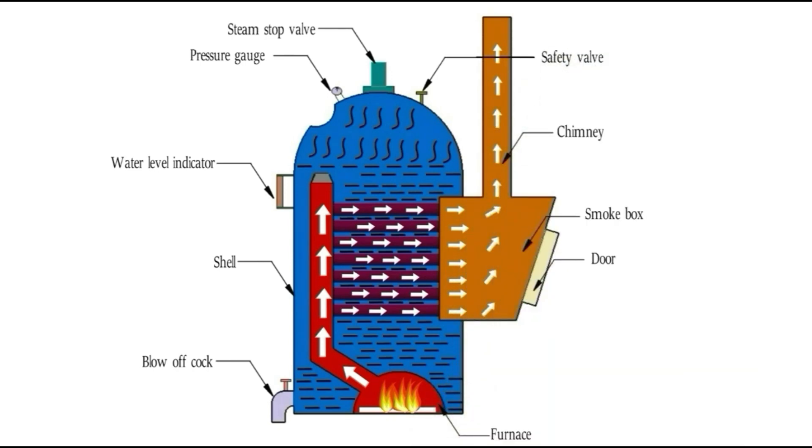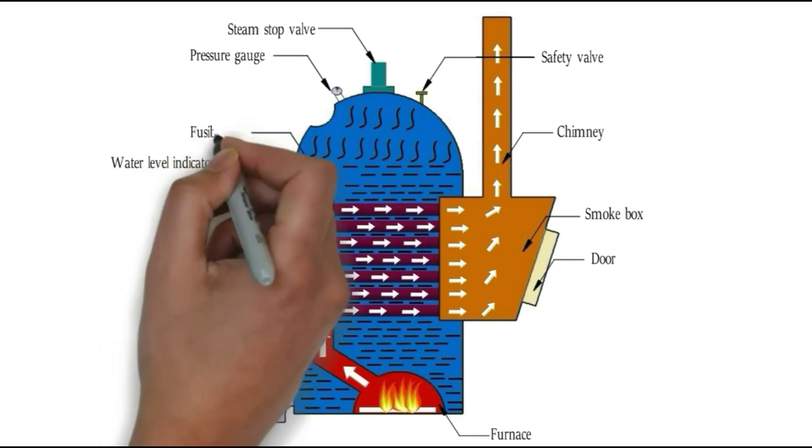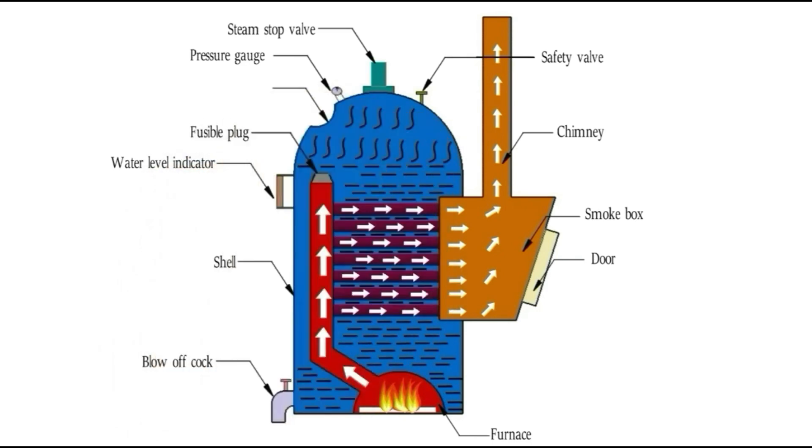The safety valve works like a pressure relief valve. The excess pressure developed inside the boiler will be minimized by the safety valve by exhausting the produced steam inside the boiler.